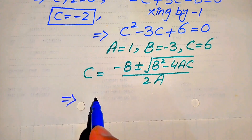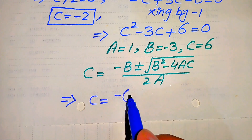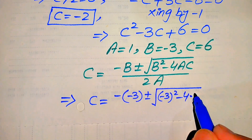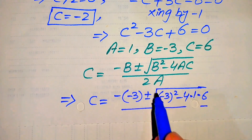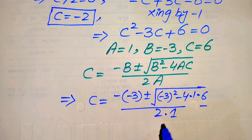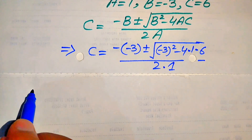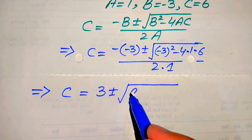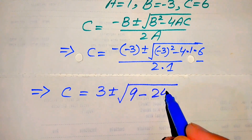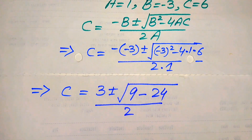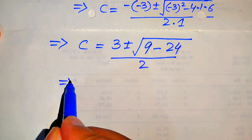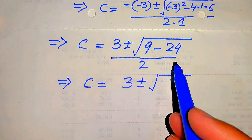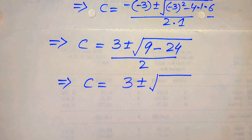Substituting the values, c equals minus(−3) ± square root of [(−3) squared minus 4(1)(6)], divided by 2(1). Simplifying: minus of minus 3 becomes 3, (−3) squared equals 9, and 4 times 6 equals 24. This gives c equals 3 ± square root of (9 minus 24), divided by 2.